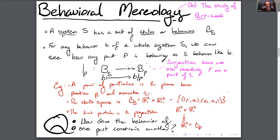A very simple example: if we have a pair of particles in the plane with position p and momentum q, the state space for two particles — particle one and particle two — would be the space of pairs of their two coordinates. The first particle is seen as the first projection, which is a surjection. That's going to be our part. So we have a two-particle system and we see a part of it as this projection.